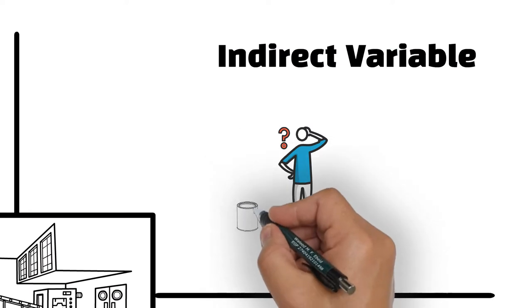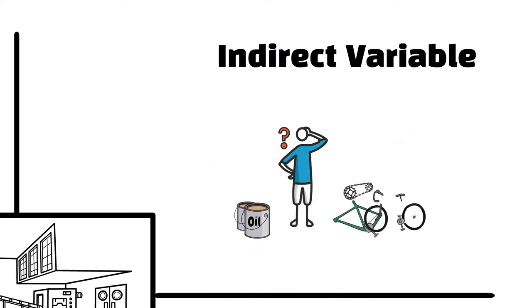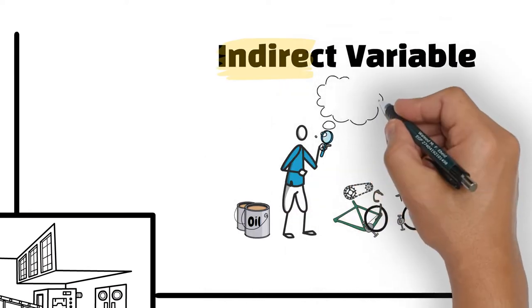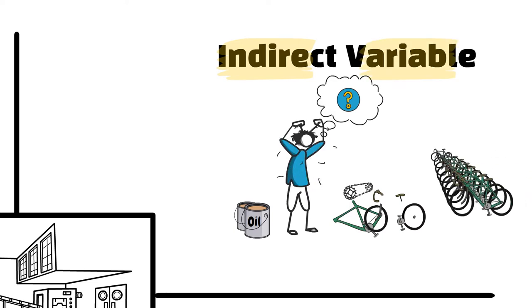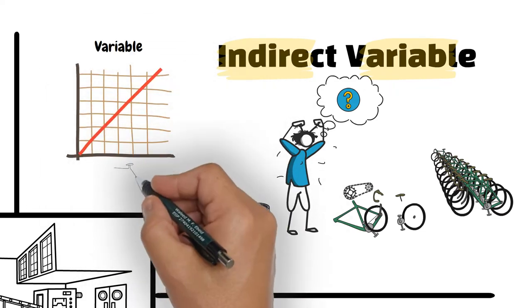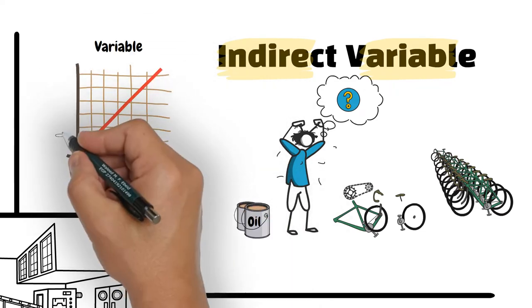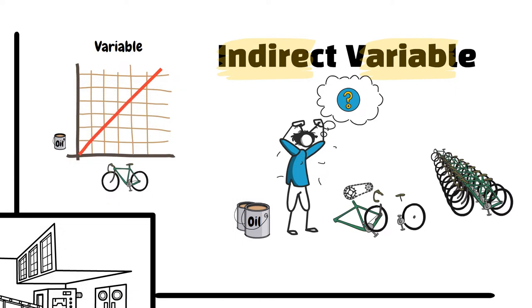Lubricants used when assembling the road bikes are indirect-variable costs. They are indirect because lubricants cannot be easily traced to the bike. It would be extremely difficult to determine the share of each bike from the lubricants. But they are variable costs because as the number of bikes assembled changes, the amount of lubricants used changes proportionately.